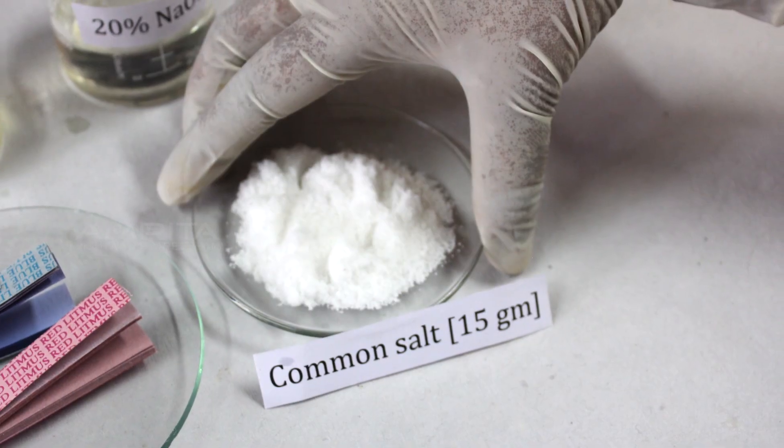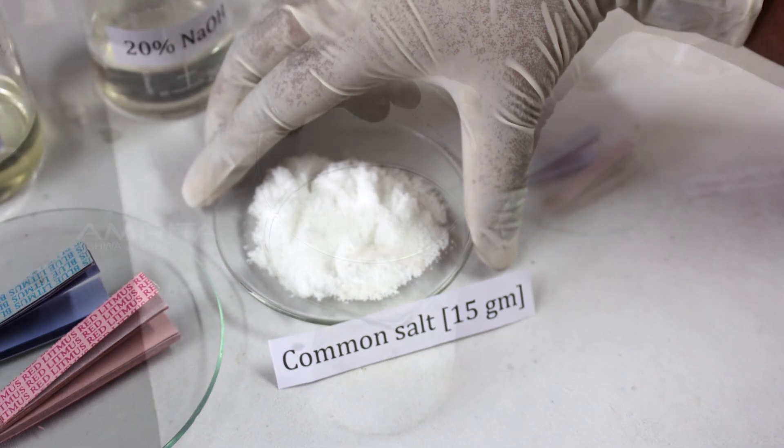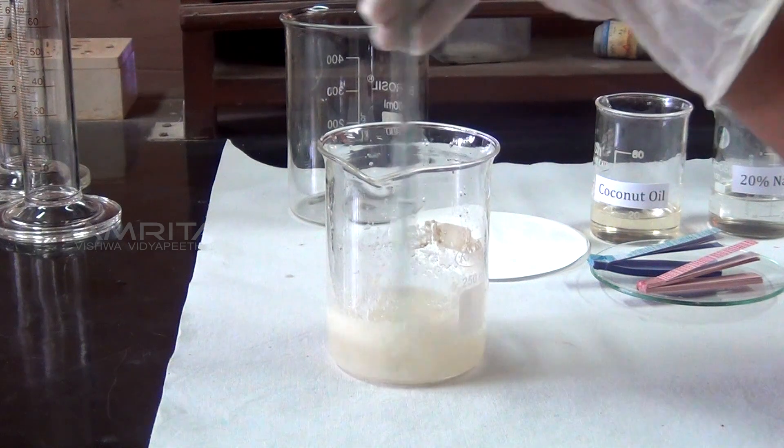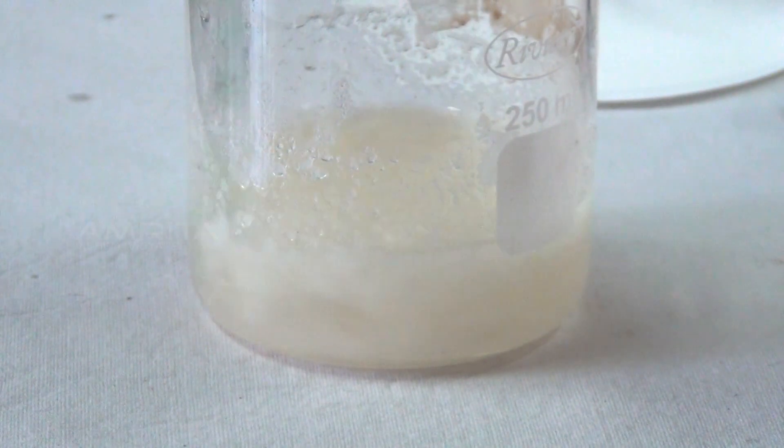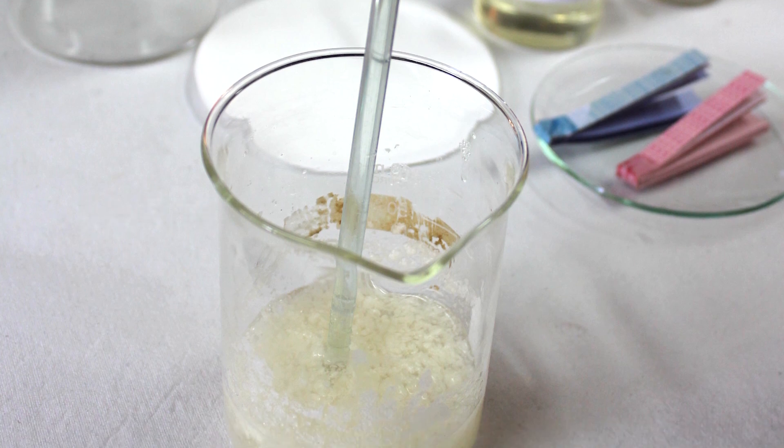Take 15g common salt and add it into the suspension and stir it well with a glass rod. After adding common salt, soap is precipitated out as a solid.